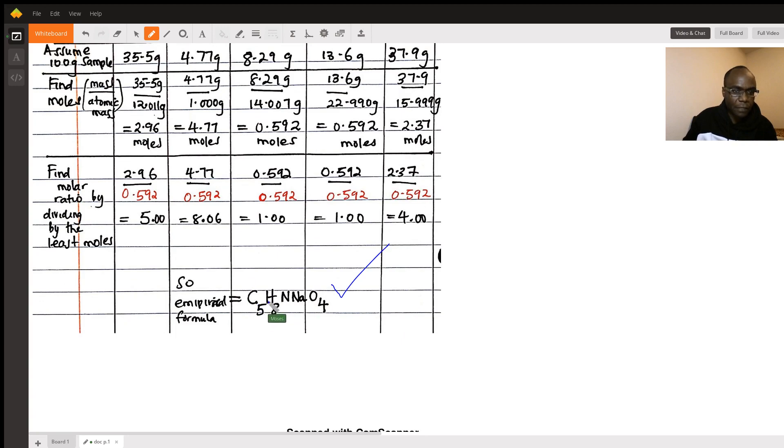Five of carbons, eight of hydrogens, one of nitrogen, we don't write one, one of sodium, we don't write the one, it's implied and then four oxygens. That's the empirical formula.